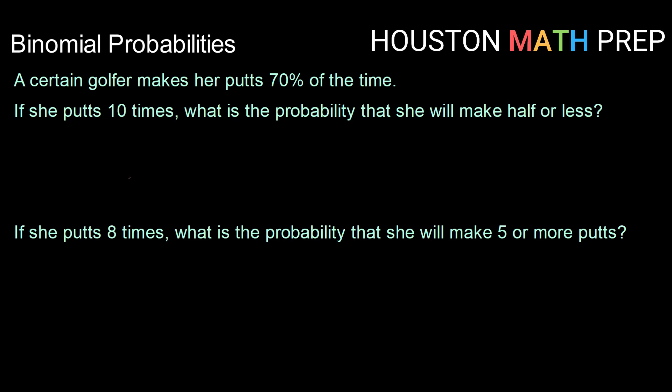Let's say that a certain golfer makes her putts 70% of the time. If she putts 10 times, what is the probability that she will make half or less of her putts?